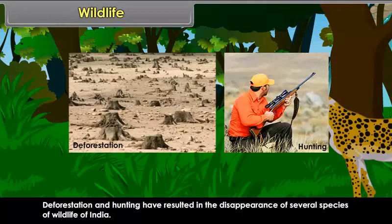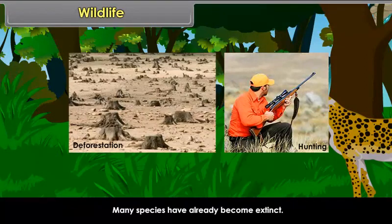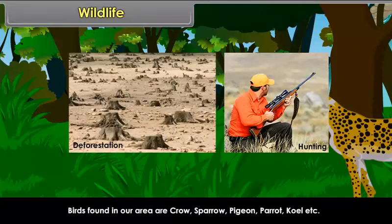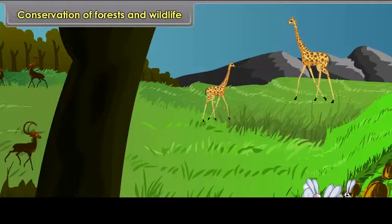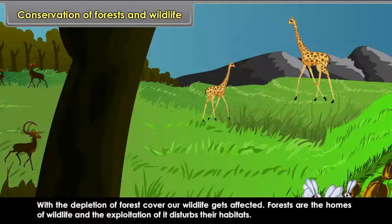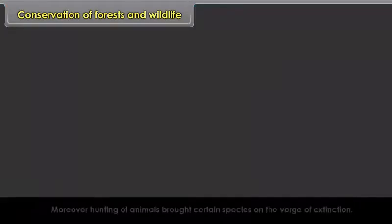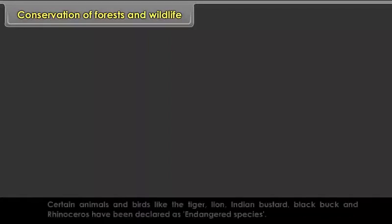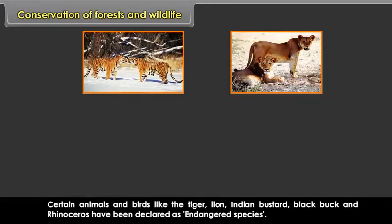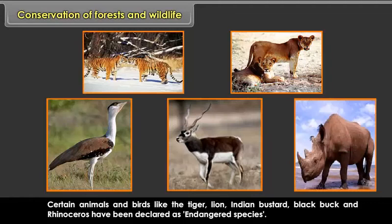Deforestation and hunting have resulted in the disappearance of several species of wildlife. Many species have already become extinct. With the depletion of forest cover, wildlife gets affected. Forests are the homes of wildlife, and exploitation of forests disturbs their habitats. Hunting of animals has brought certain species to the verge of extinction. Certain animals and birds like the tiger, lion, Indian bustard, black buck, and rhinoceros have been declared endangered species.